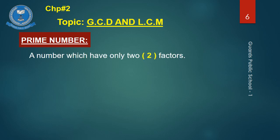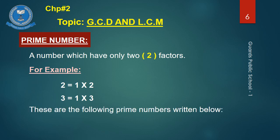Now students, it's the prime number. A number which has only two factors is called a prime number. For example, 2 equals 1 multiplied by 2, and 3 equals 1 multiplied by 3. The following are prime numbers: 2, 3, 5, 7, 11, etc. This is how we understand — a prime number is one which has only two factors.